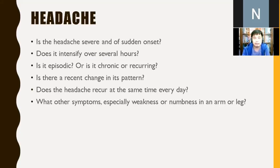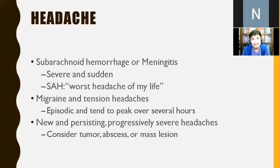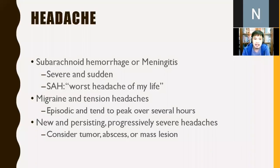Is the headache chronic? Is there a recent change in pattern, especially for elderly patients? Does the headache occur at the same time every day — for example, every morning when the patient wakes up? Are there other symptoms like weakness or numbness in an arm or leg, which could indicate an associated nervous system problem? Subarachnoid hemorrhage or meningitis present as severe and sudden headache — subarachnoid hemorrhage is described as the worst headache of one's life, 10 out of 10 on the pain scale.